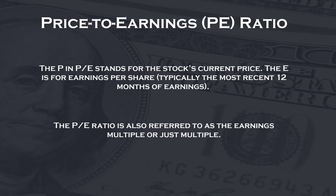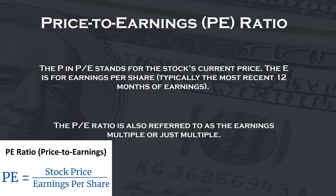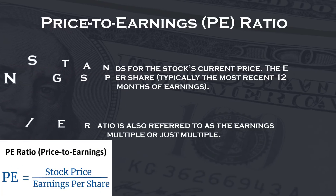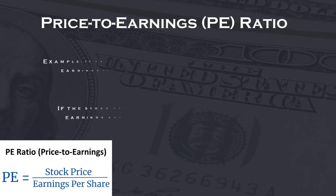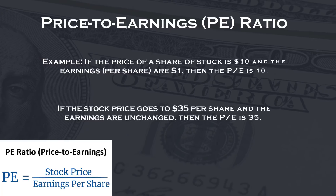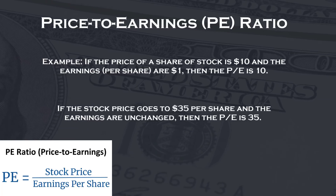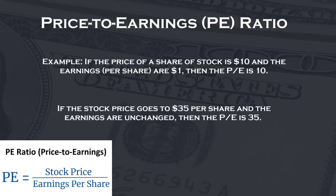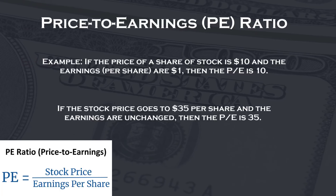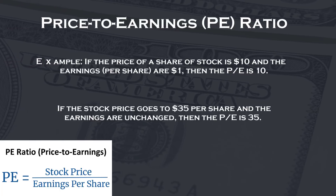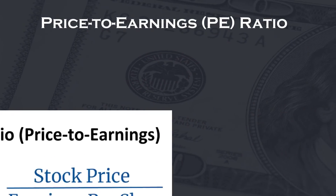You calculate the PE ratio by dividing the price of the stock by earnings per share. If the price of the stock is $10 and the earnings per share are $1, then the PE ratio is 10. If the stock price goes up to $35 per share and the earnings are unchanged, then the PE ratio is 35. The higher the PE, the more you pay for the company's earnings.